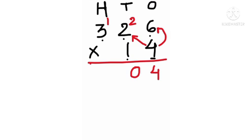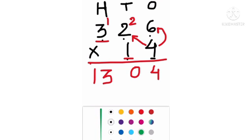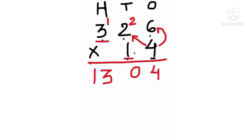Now we multiply 4 by 3 — 4 threes are 12 — adding the carry of 1 gives 13. Now we multiply 1 with all the digits: 6, 2, and 3. But 1 is on the 10s place, so we are not going to write anything on the 1s place — put a cross or a 0.